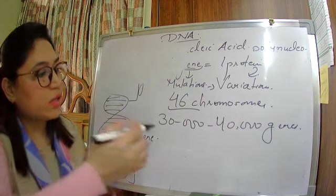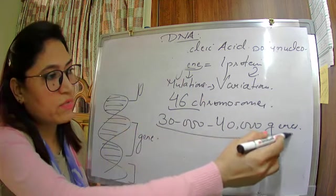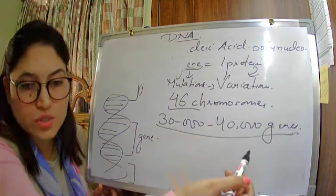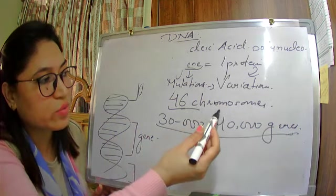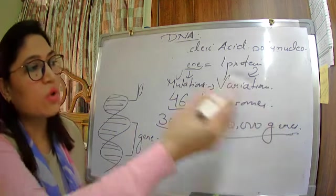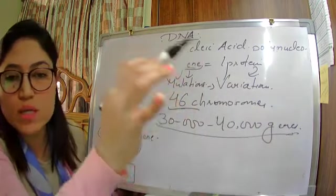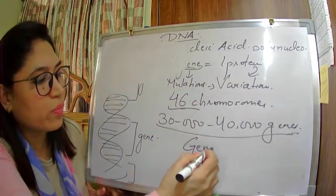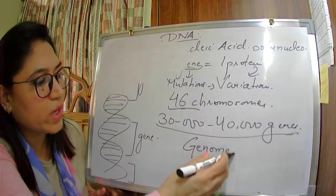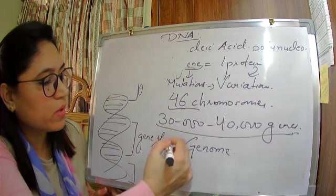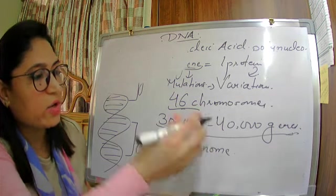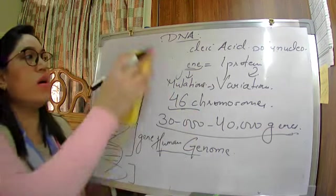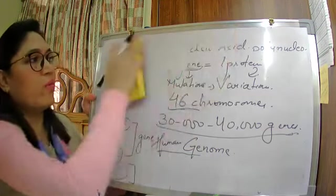If 30,000 to 40,000 genes are present in 46 chromosomes, the whole gene set of a human — the complete human gene set — we call it a genome. The full gene set of the human body is called a genome.